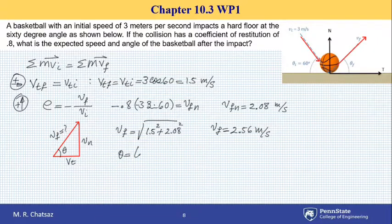And theta is inverse tan of opposite over adjacent, 2.08 divided by 1.5. That gives an angle of 54.2 degrees.